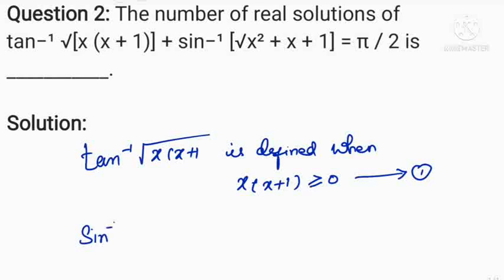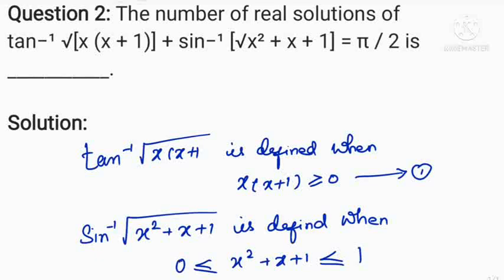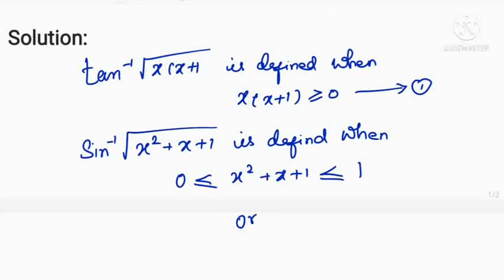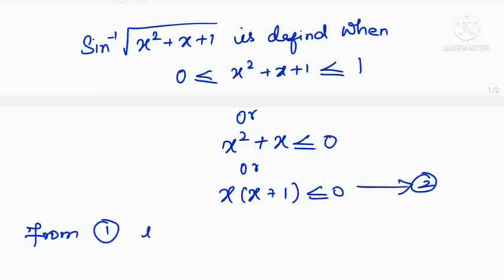Now, sin inverse of root of x²+x+1 is defined when x²+x+1 lies between 0 and 1, which means x²+x is less than or equal to 0, or x(x+1) is less than or equal to 0. Mark this as condition 2. From conditions 1 and 2, we get that x(x+1) equals 0.